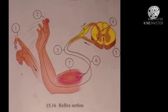Look at the diagram above. There are certain numbers given. According to you, what should be the names given to these numbers? What should be written on 1? Heat. What should be written on 2? Pain. Try to answer it yourself.